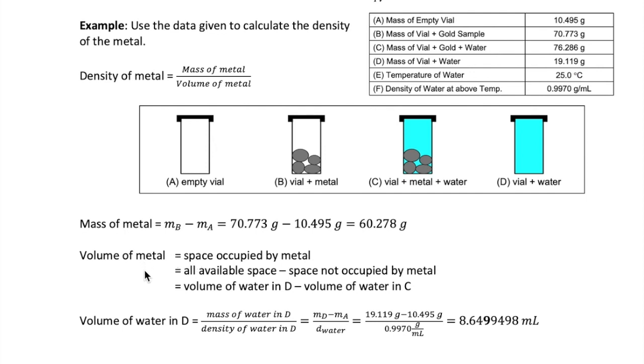Now, first thing to remember is that volume is just the amount of space that is occupied in this particular case by the metal. So to get that volume, what we need to do is figure out what the total volume of the space is and then subtract the space that is not occupied by the metal. Another way to do this is to subtract the volume of water in D by the volume of water in C. That will give us the volume of the metal.